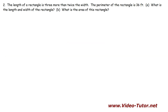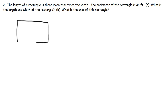Now let's work on another problem — it's similar but slightly different. Number two: the length of a rectangle is three more than twice the width. The perimeter of this rectangle is 36 feet. What is the length and the width? Let's begin by drawing a picture with L and W. We need to write an equation that relates L and W: the length is three more than twice the width.